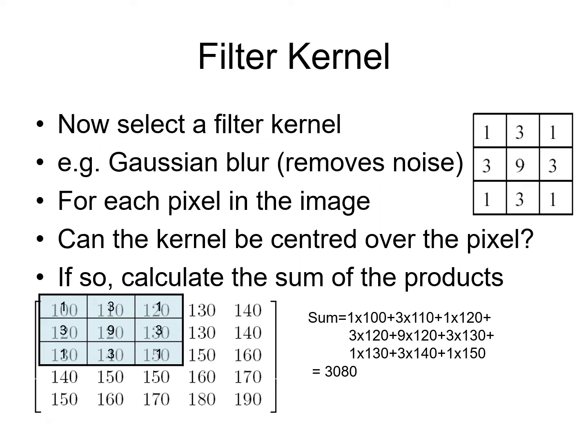For each pixel we will work out a sum of the products of the filter and the pixels. For the current pixel we initialize the sum to be 0. Then we start at the top left of the filter and multiply the filter weight, which is 1, by the pixel value, which is 100, and add that to the sum. We move to the next filter weight, which is 3, and multiply that by the corresponding pixel value 110. Then the third weight on the row, which is 1, and multiply that by the pixel value 120.